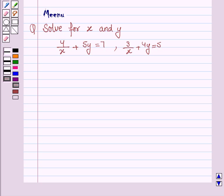Hello and welcome to the session. Let us discuss the following question: Solve for x and y. Let's move on to the solution. Given equations are 4/x + 5y = 7 and 3/x + 4y = 5.